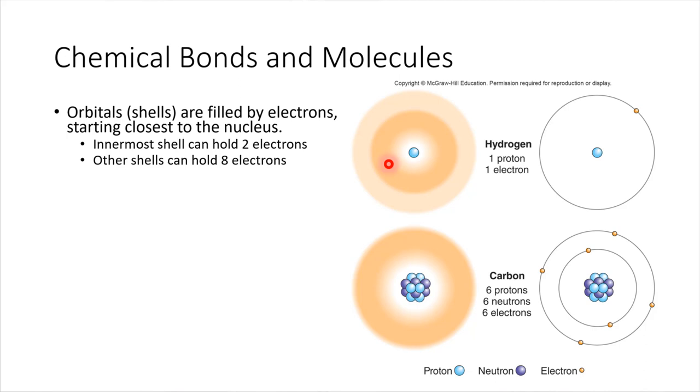I need to mention one caveat here. This is true for the types of elements we'll be dealing with for the most part in biology. This isn't necessarily true for all elements in chemistry, but for the ones we'll be dealing with, this is what you'll need to know. Innermost shell can hold two electrons, other shells can hold eight.